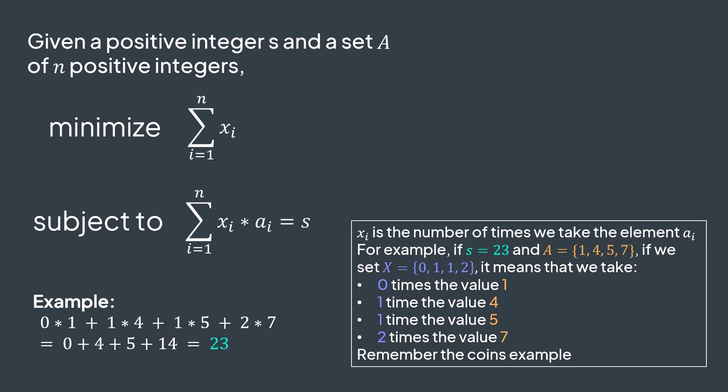And thus the mathematical formulation of our problem. Given a positive integer s and a set of n positive integers a, we want to find a set of positive integers x1 to xn, that minimizes the sum of values xi, while respecting the constraint of having the sum of xi times ai equal to s. Now from this definition, the problem becomes clear, we know what we have and what we're searching for.